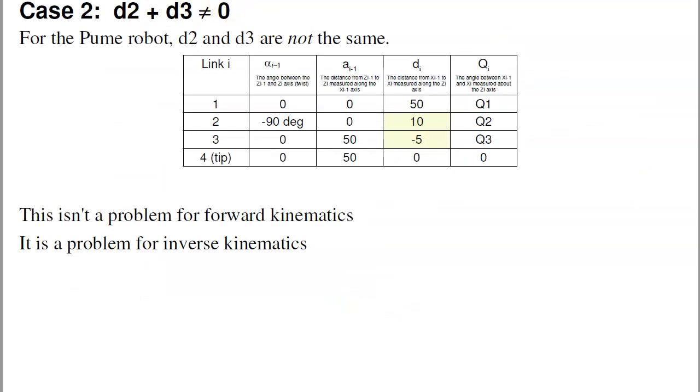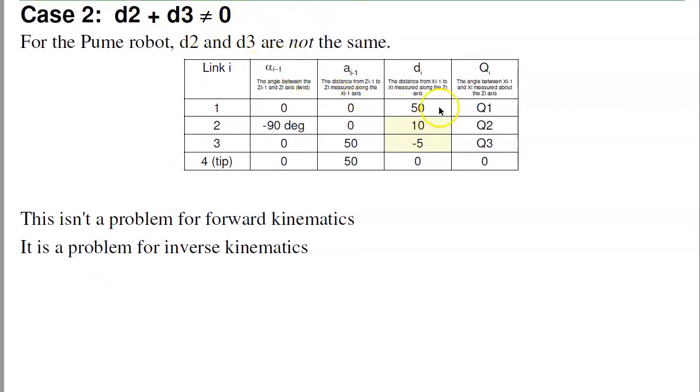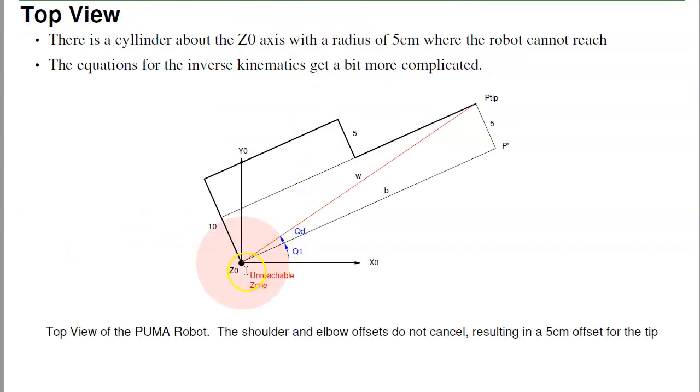For the actual Rhino Robot, it's a little bit more complicated. In this case, the offsets don't exactly line up. What that does is, if you look at the top, I'm going to offset by 10 centimeters going to the shoulder, offset by 5 centimeters going to the wrist. The tip misses the point that I'm pointing at by 5 centimeters. That makes the equations a little bit more complicated for the actual Rhino or actual Puma robots, but you can still handle it. Essentially, what you do is I point the robot 5 centimeters to the right of where I want the tip to be, and then you hit it.